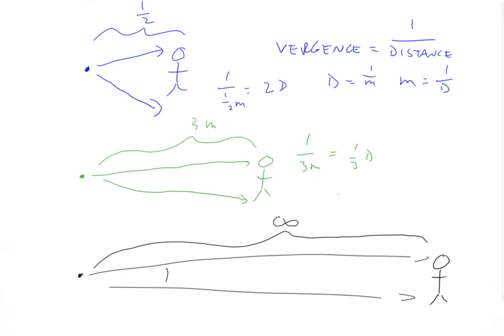What about this one where it's infinity? The vergence equals one over infinity, and one over infinity approaches zero or essentially equals zero. This mathematically proves what we talked about last time: if you get an infinite distance away from a point source of light, the light will have no vergence. Vergence will be zero, and the light rays will be parallel.